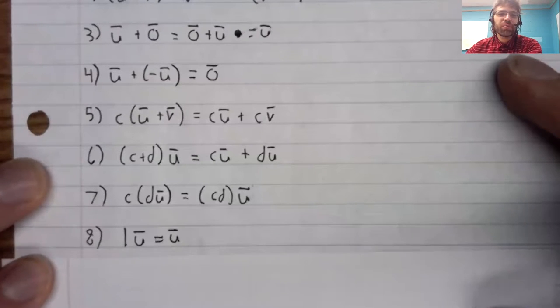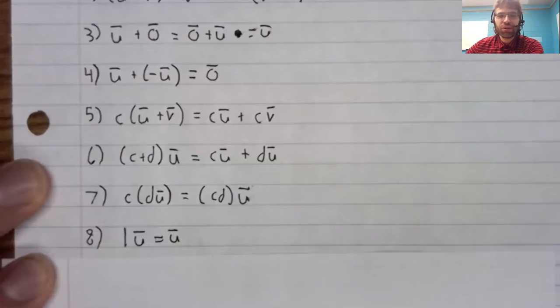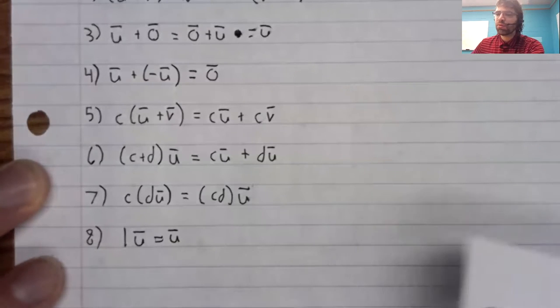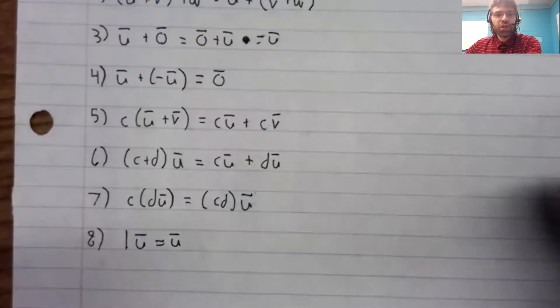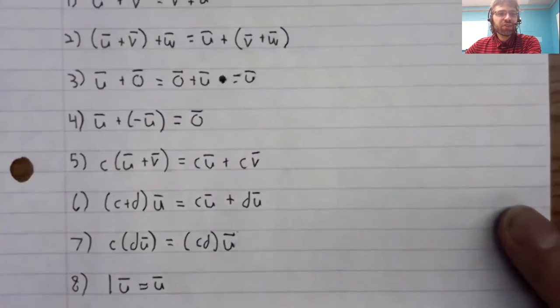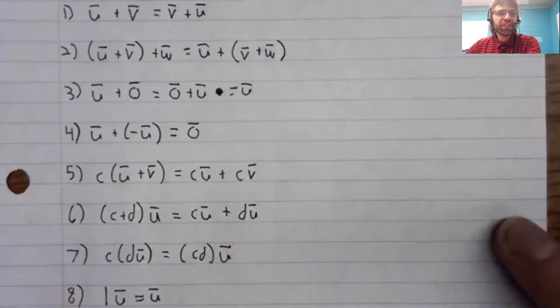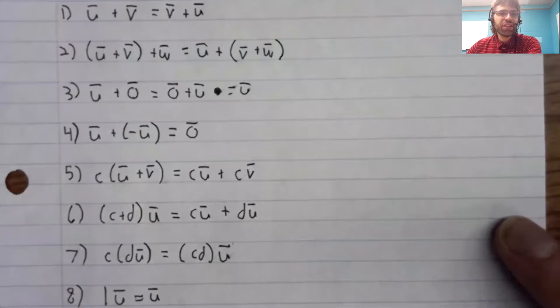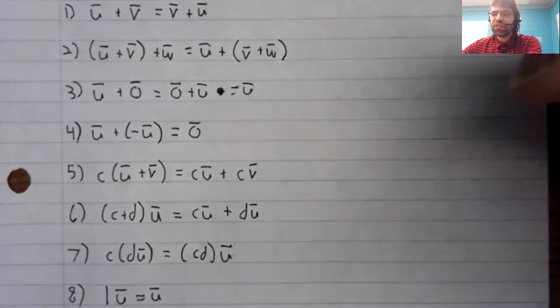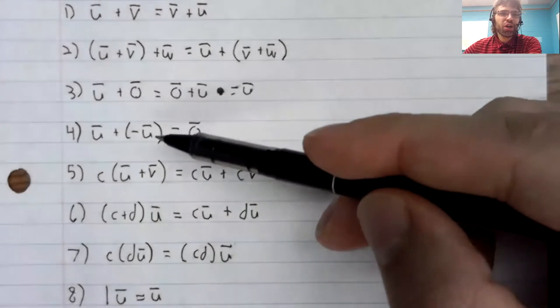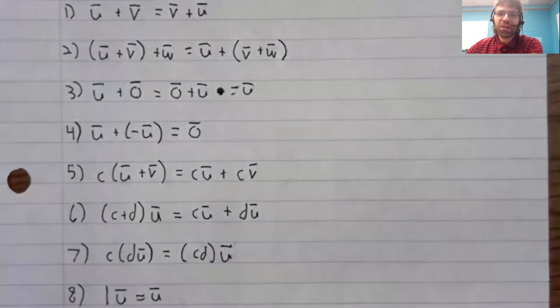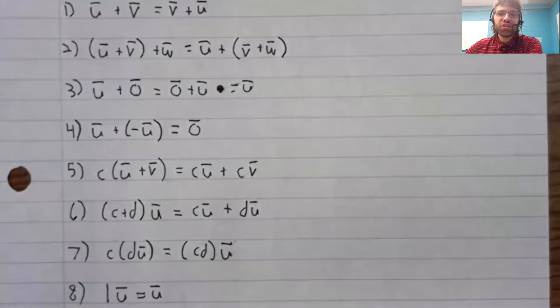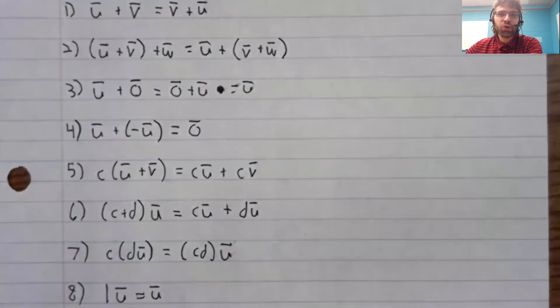And multiplication by one doesn't change a vector. That's true of real numbers. So in a sense, this is quite a list we have here. But all of these entries are really saying the same thing: that this addition and this scalar multiplication have the properties we would expect addition and scalar multiplication to have.